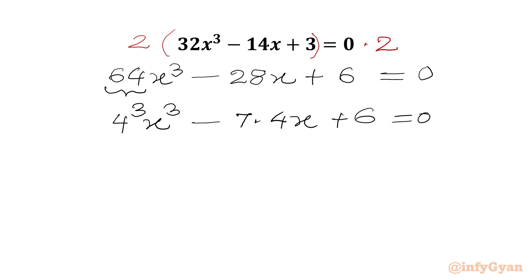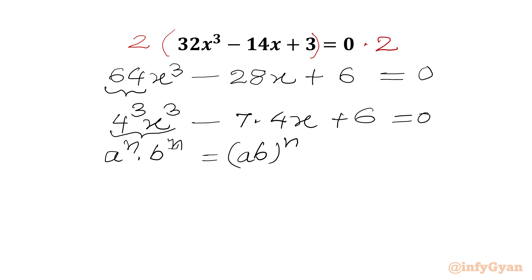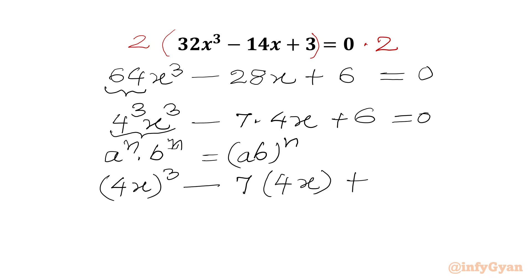Now we will use the exponent law: aⁿ · bⁿ = (ab)ⁿ. Applying this property, we can write (4x)³ minus 7 times (4x) plus 6 equal to 0.